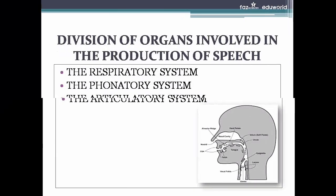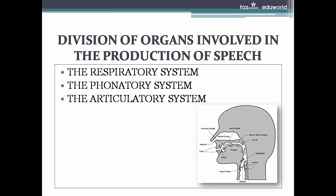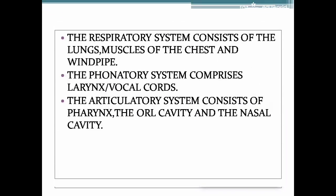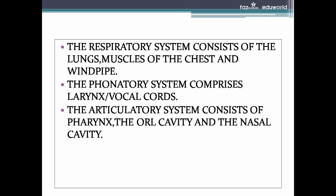The division of organs involved in the production of speech includes the respiratory system, the phonatory system, and the articulatory system. The respiratory system consists of the lungs, muscles of the chest, and windpipe. The phonatory system comprises the larynx or vocal cords. The articulatory system consists of the pharynx, the oral cavity, and the nasal cavity.